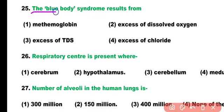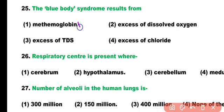Question number 25. The blue baby syndrome results from: methemoglobin, excess of dissolved oxygen, excess of TDS, or excess of chloride. Correct answer is option 1. Blue baby syndrome results from methemoglobin.